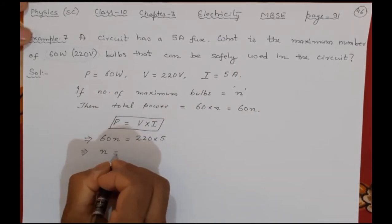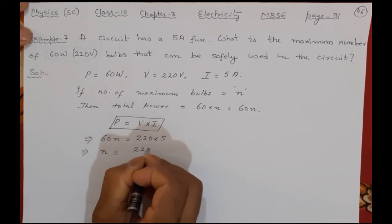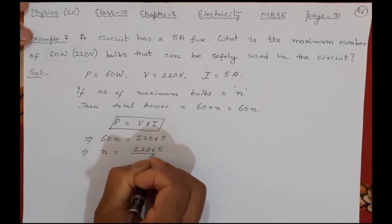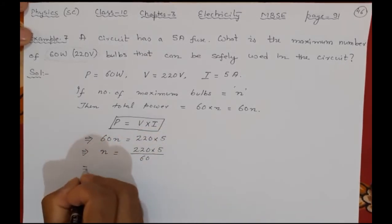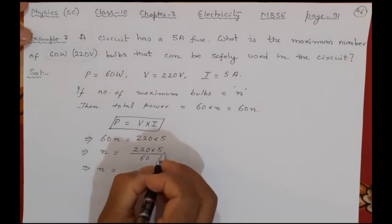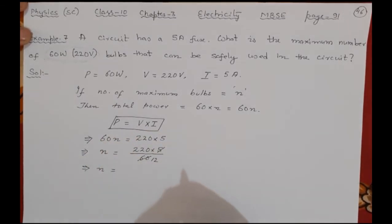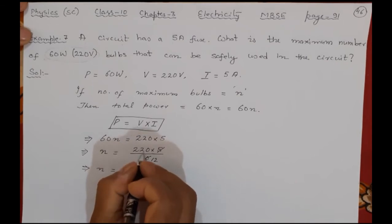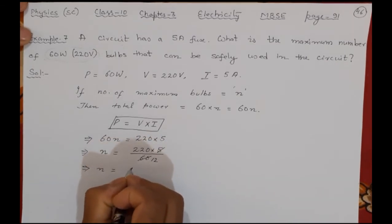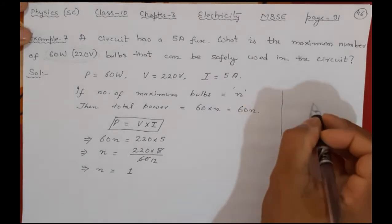n means number of bulbs. 220 into 5 divided by 60. So what it will give me? n equal to, this will be 12. 12 and this will give me 12 ones are 12.